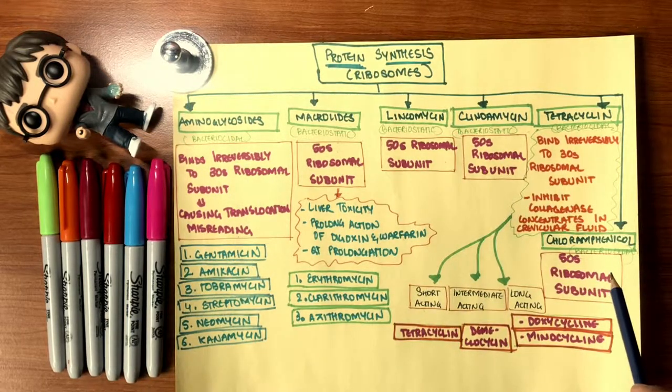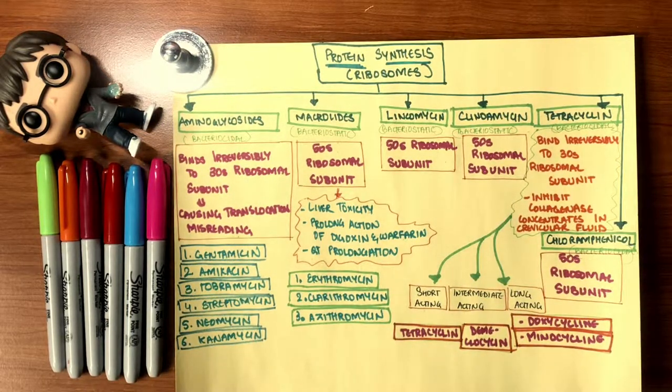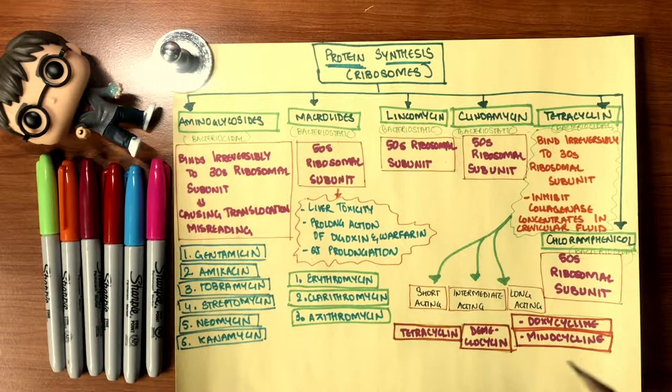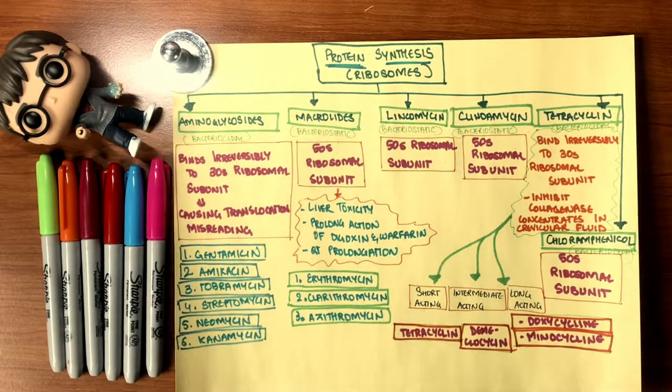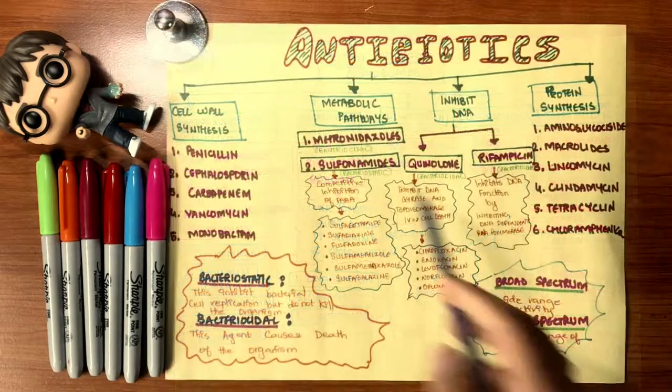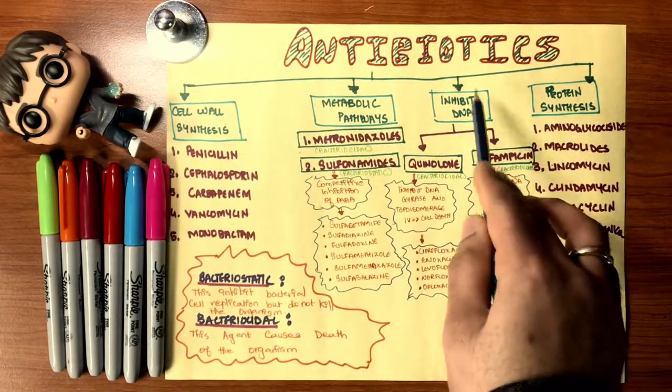The last is chloramphenicol. It is bacteriocidal, although it binds to 50S ribosome unit. All of these drugs will have an effect on how a bacteria metabolizes or creates its proteins and how it sustains. Let's move on to the next category.